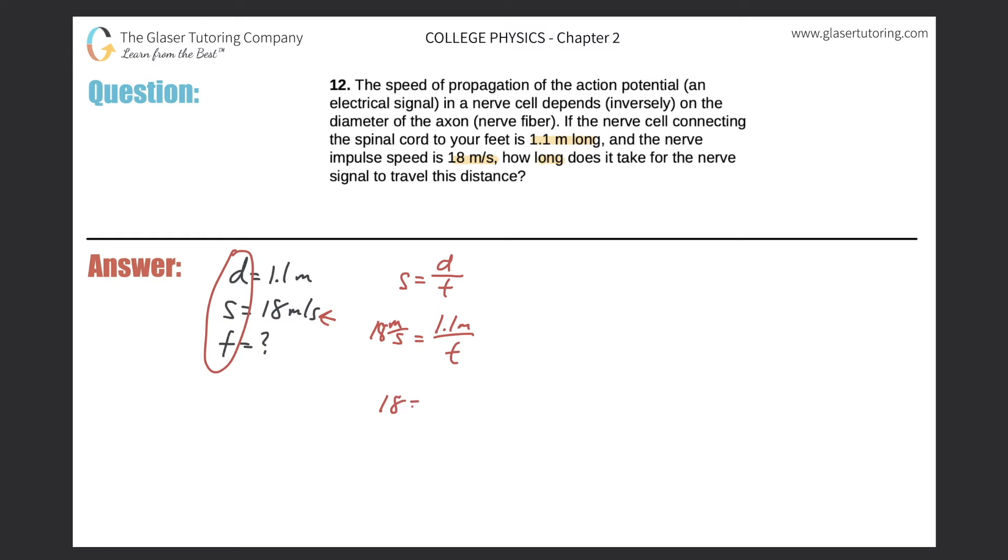So this is going to be 18 equals 1.1 over t. I'll just get rid of the units to make the problem easier. Don't worry about the units now—just remember, if your time value here is in seconds in the velocity, the time value you calculate will also be in seconds. Now I'm just going to switch these two variables, so t equals 1.1 over 18.